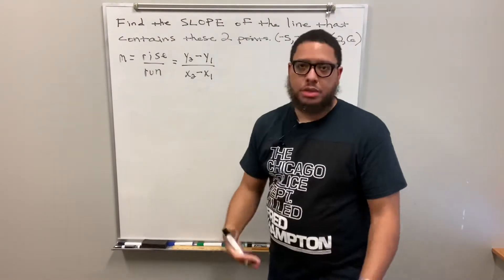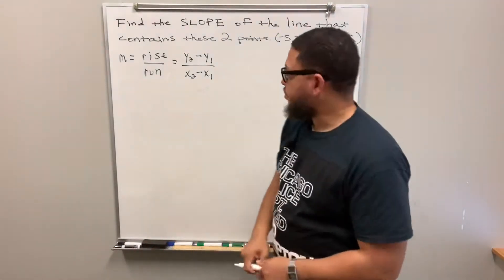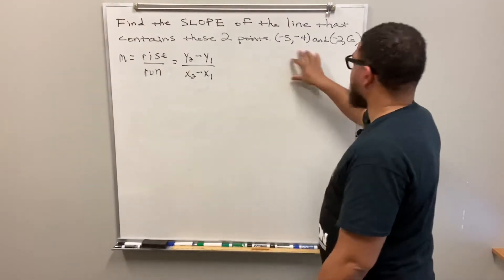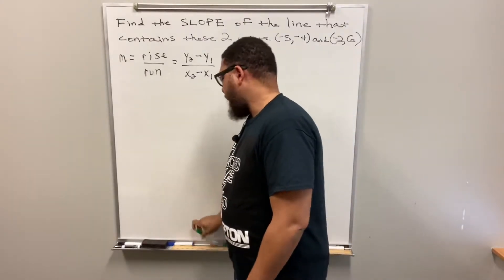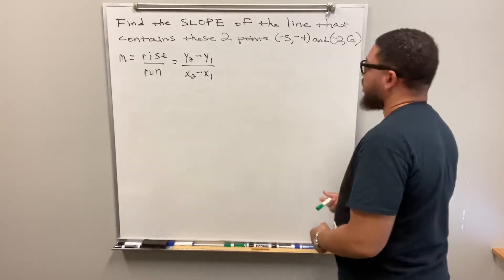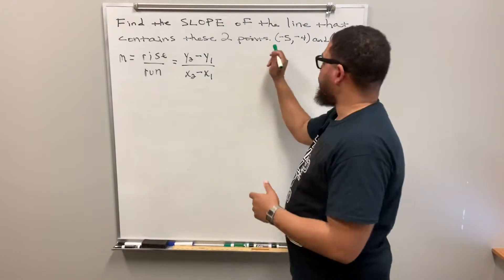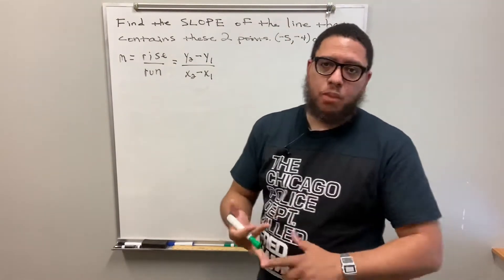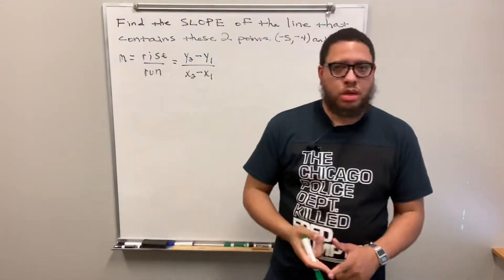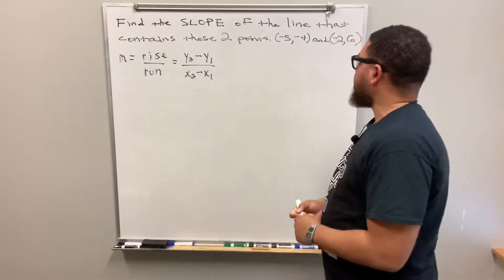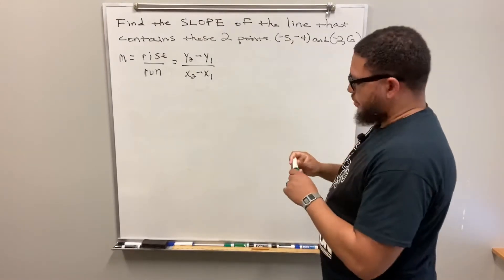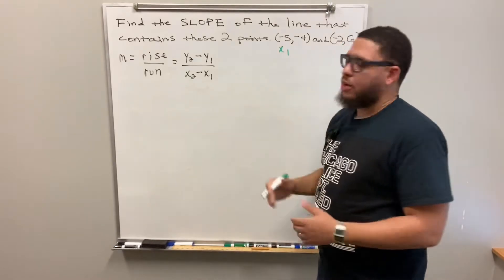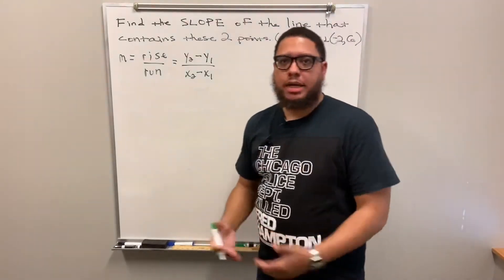The first thing I recommend you do is look at your two points. You should label and identify which of the four numbers is your x₁, which is your y₁, which is your x₂, and which is your y₂. So this negative five right here is going to be my x₁.